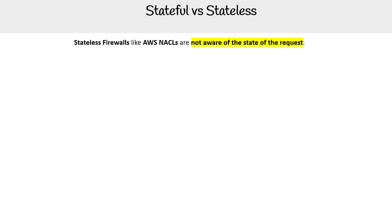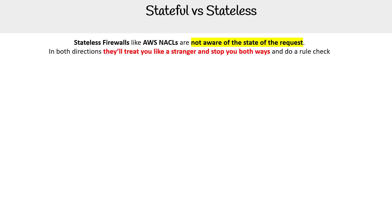Stateless firewalls, like AWS NACLs, are not aware of the state of the request. That's why they're called stateless — they don't know anything about it. So in both directions, they'll treat you like a stranger and stop you both ways to do a rule check.